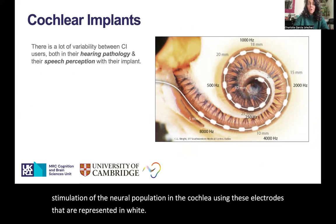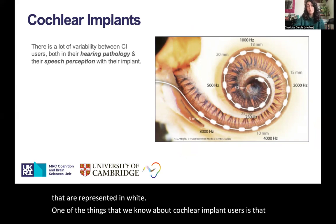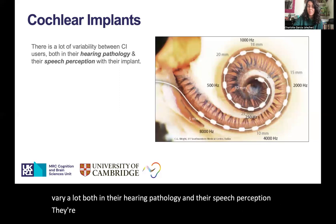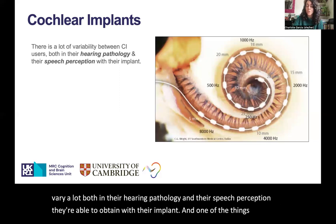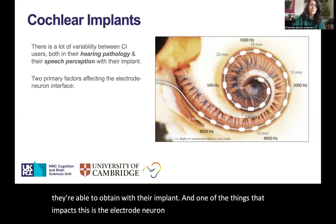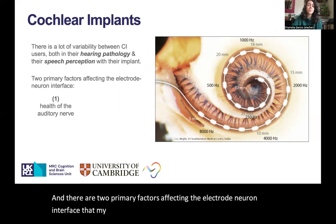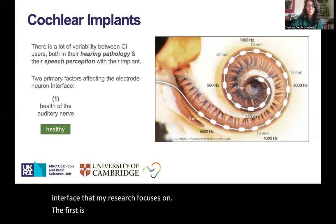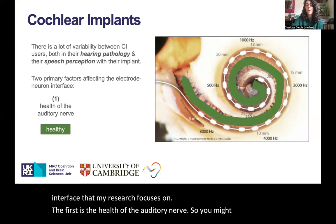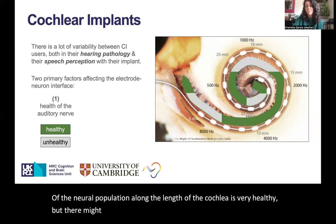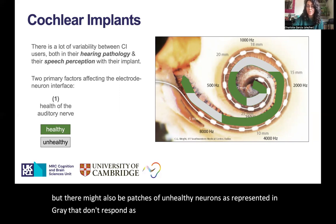One of the things that we know about cochlear implant users is that they vary a lot, both in their hearing pathology and the speech perception they're able to obtain with their implant. One of the things that impacts this is the electrode-neuron interface. The first primary factor my research focuses on is the health of the auditory nerve. You might imagine a scenario where all of the neural population along the length of the cochlea is very healthy, but there might also be patches of unhealthy neurons, represented in grey, that don't respond as well to electrical stimulation.